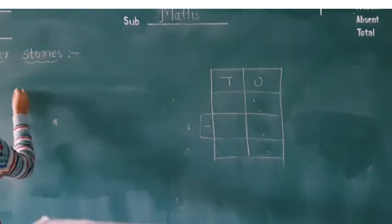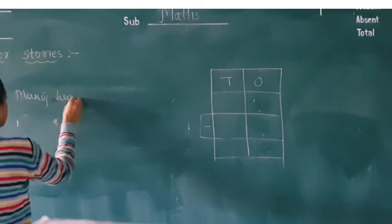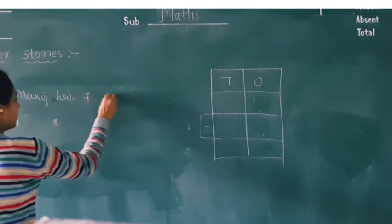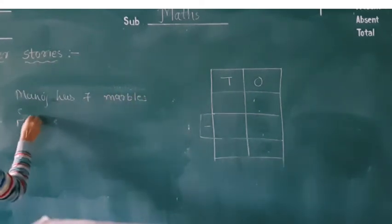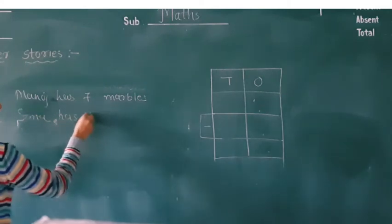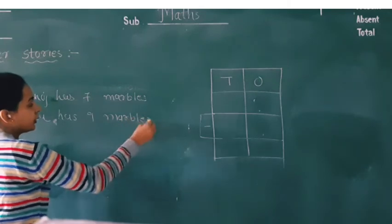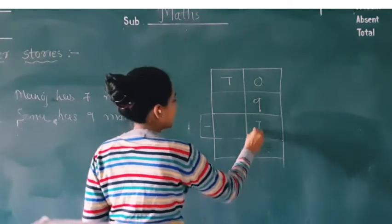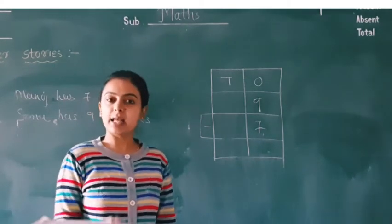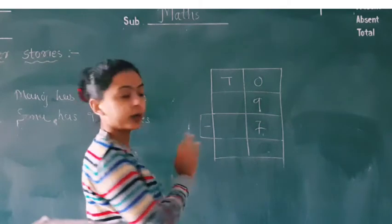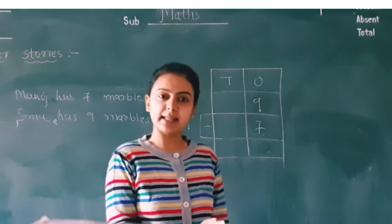Manoj has 7 marbles. 9 marbles which Sonu has and 7 marbles which Manoj has. 9 minus 7, so subtract 7 from 9.